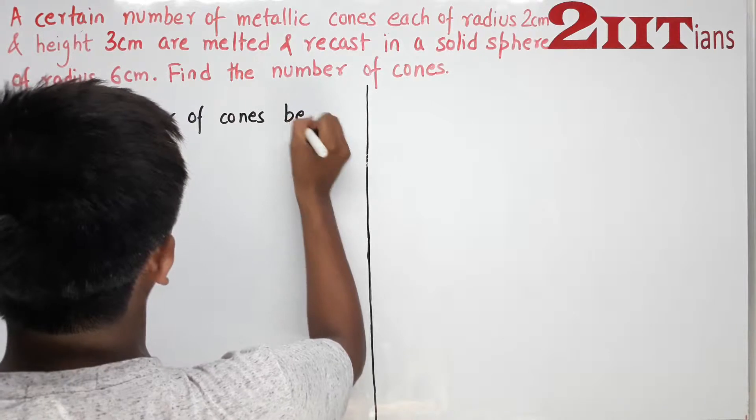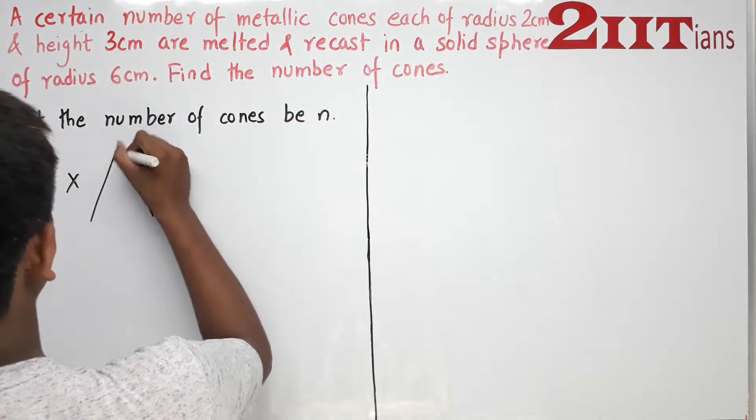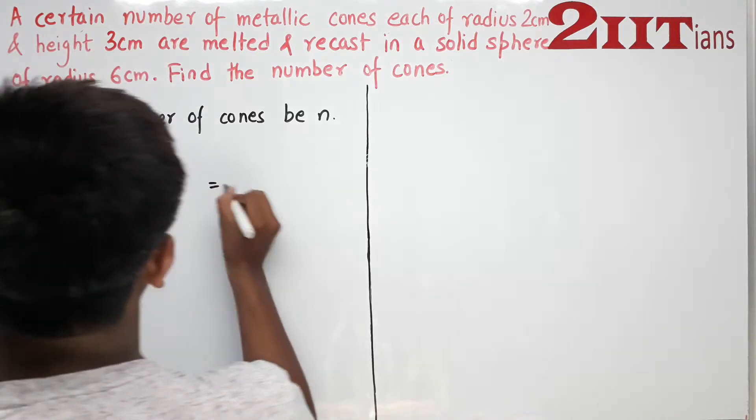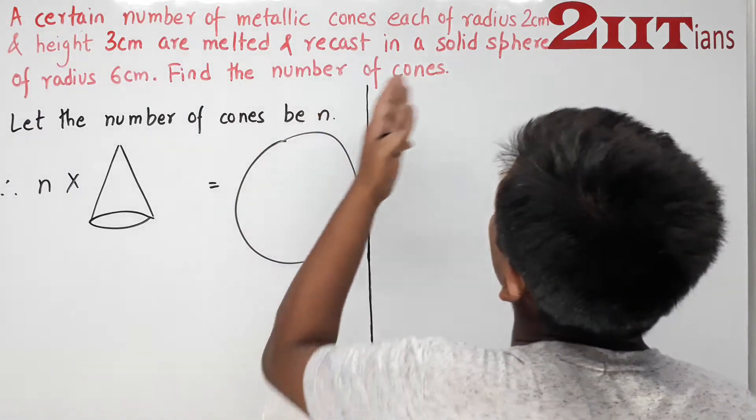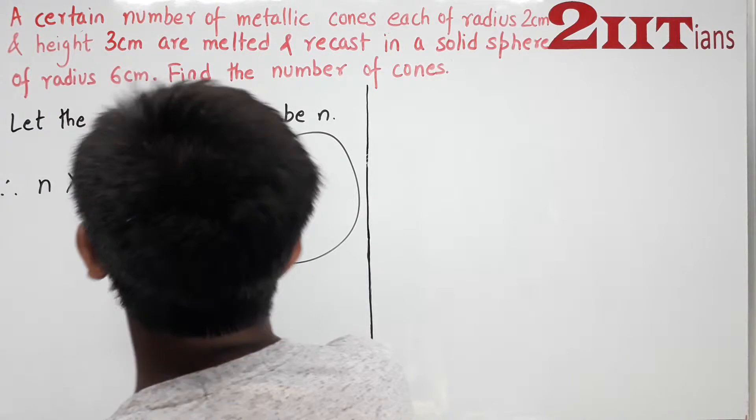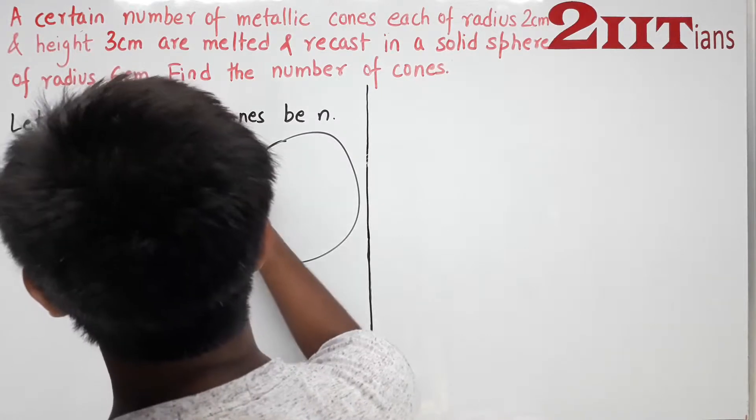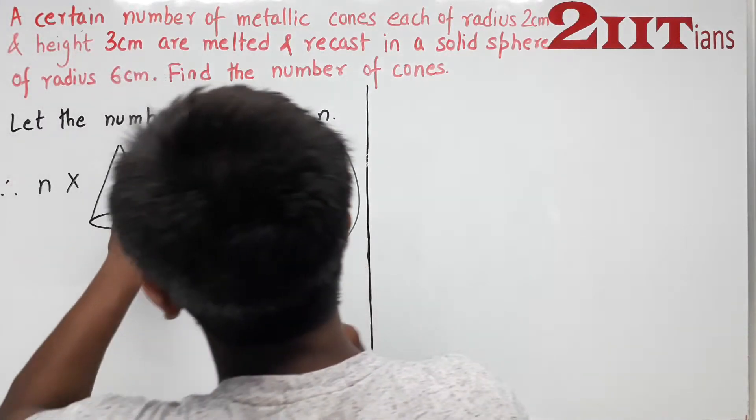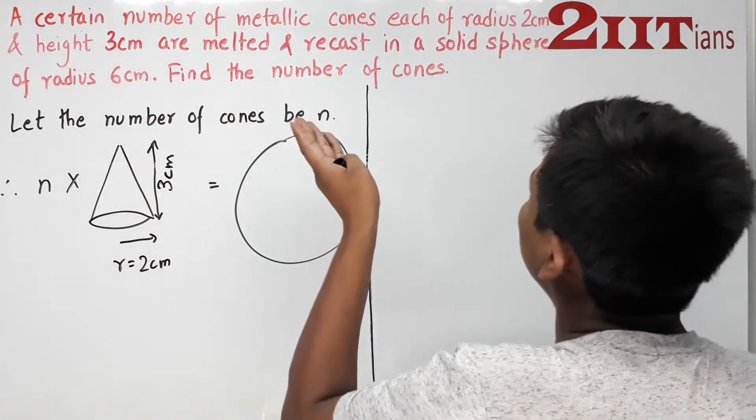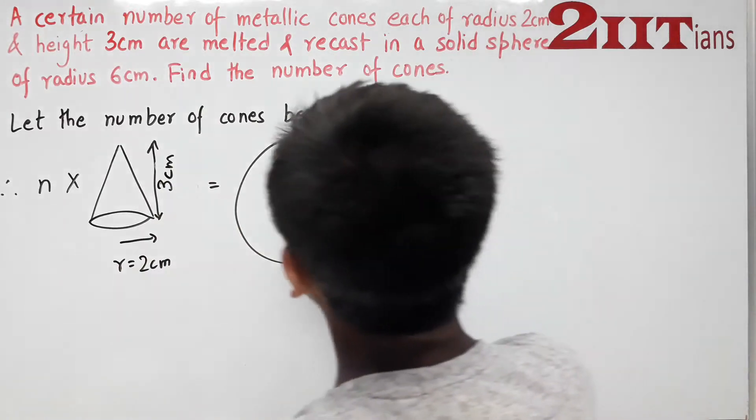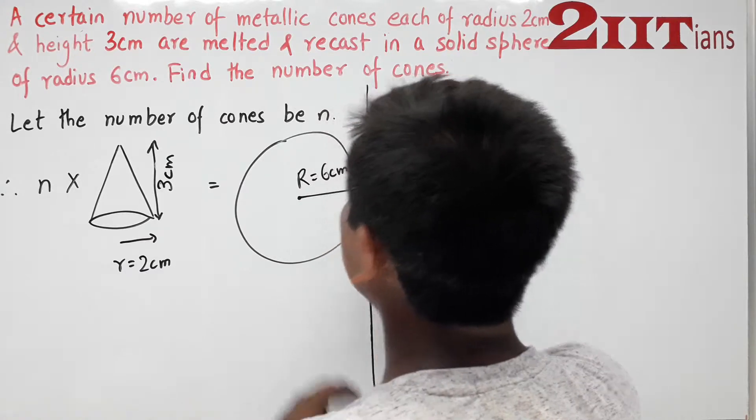Therefore, n multiplied by the volume of each cone. Each cone has radius small r equal to 2 centimeters and height h equal to 3 centimeters. These cones are melted and recast into a solid sphere of radius 6 centimeters, which we'll call capital R since it's larger.